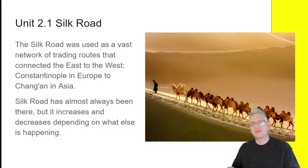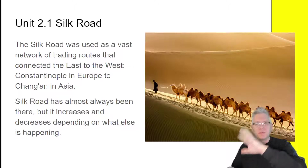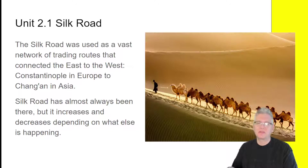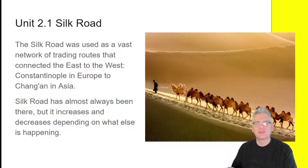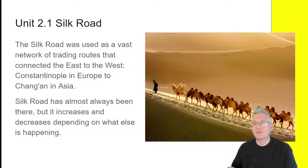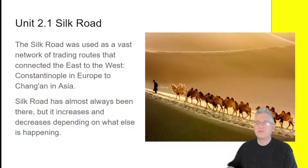The Silk Road is a vast network of trading routes that connected the east to the west — primarily Constantinople in Europe to Chang'an in China. These are the two major cities on each side of the Silk Road, but it goes through lots of other locations all throughout Asia. The Silk Road has almost always been there, even back to the Romans and earlier, but it increases and decreases depending on what's happening. In this time period, 1200–1450, it's really big and powerful.